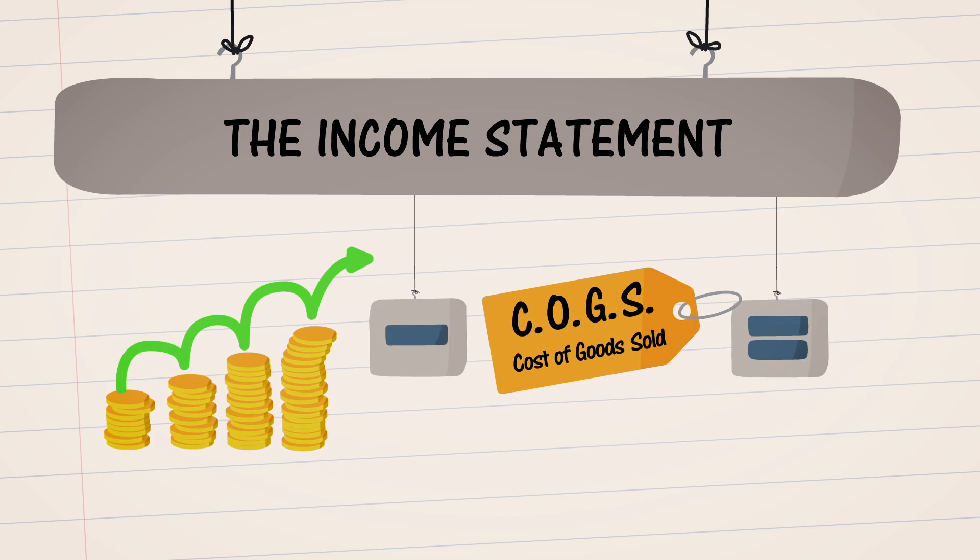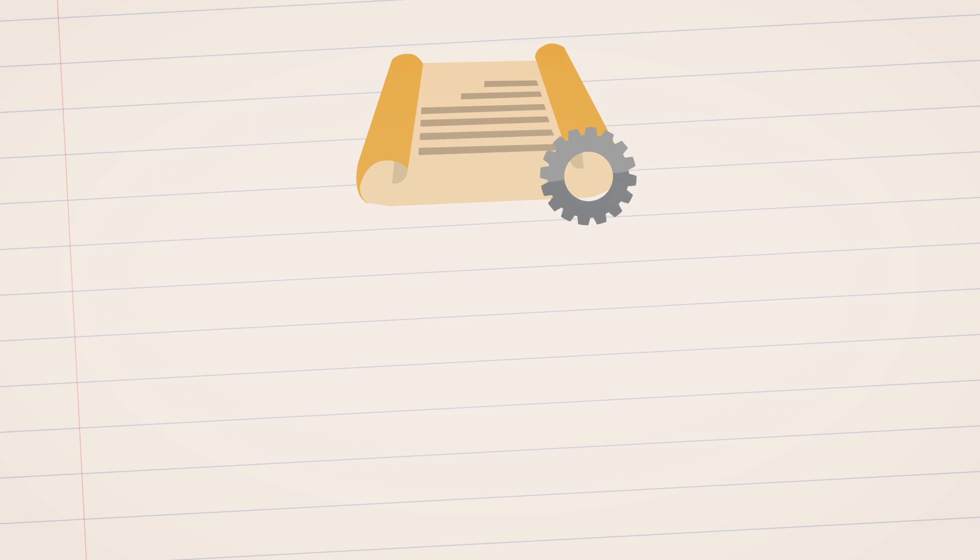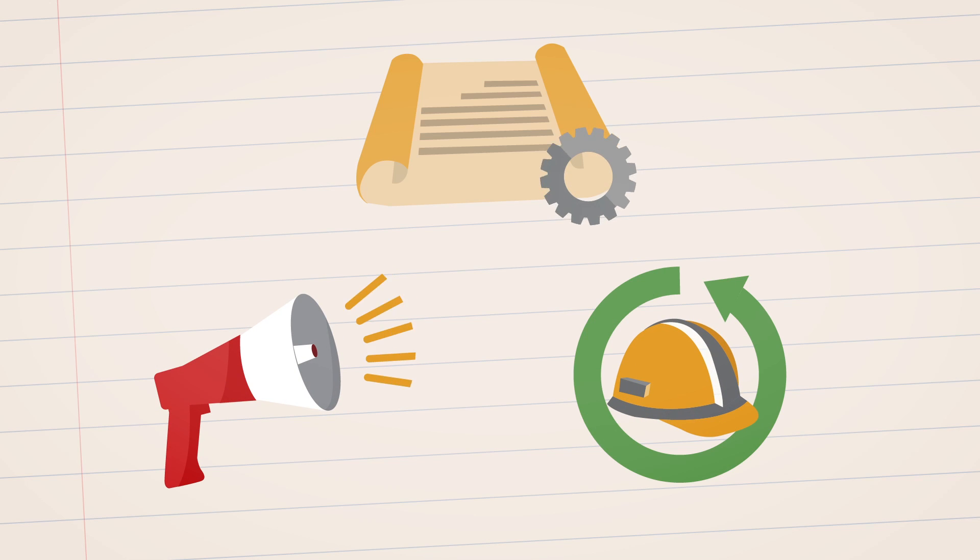Subtract COGS from revenue and you've got gross profit. Then come the operating expenses, which include day-to-day things like marketing costs, indirect labor costs, and so on.